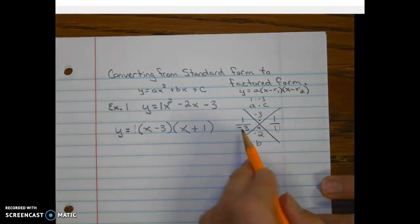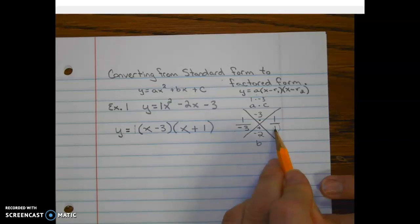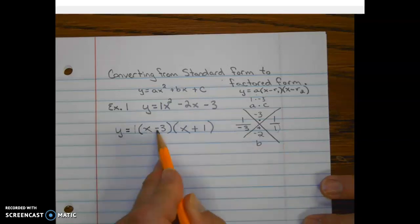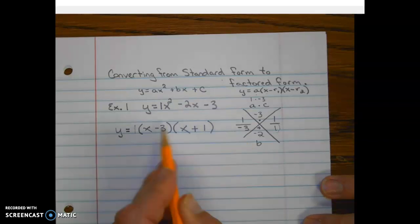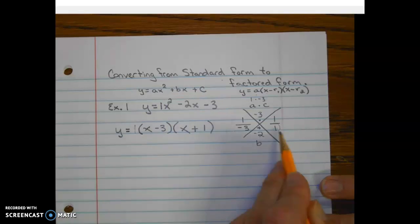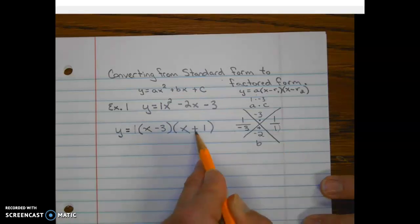So whatever the sign is of your bottom number here is the sign that you're going to put into your factors. So if it's negative 3, it's going to be minus 3. If it's positive 1, it's going to be plus 1.